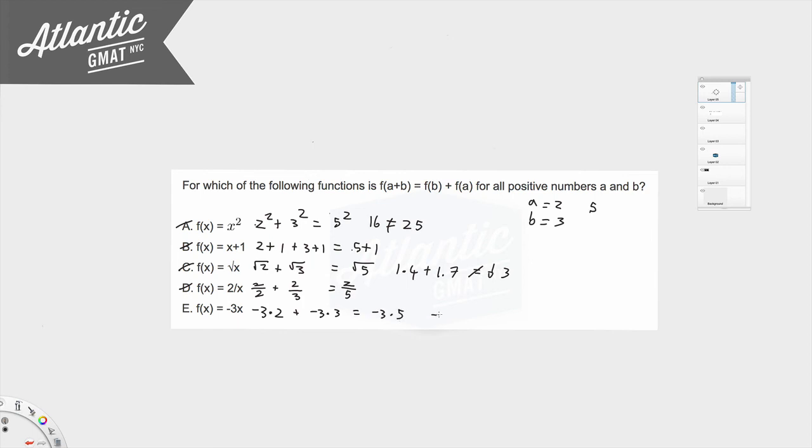One thing to keep in mind when picking numbers is that you could be left with two answer choices that satisfy the question. It's really unlikely, and I would say I've never seen a function question like this that has produced two answers when picking numbers. But it is possible. And if that happens, all you have to do is pick another set of numbers. And you don't have to test everything again, just the answer choices that you have left.